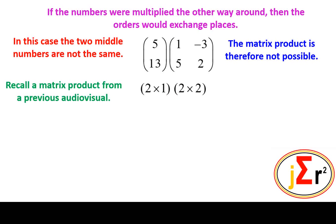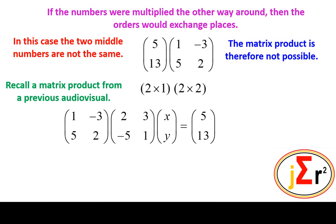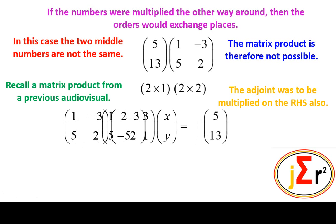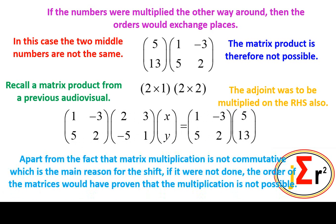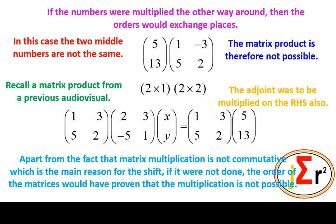Recall a matrix product from a previous audio-visual. We had a matrix product like that — the adjoint was to be multiplied on the right-hand side also. Apart from the fact that matrix multiplication is not commutative, which is the main reason for the shift, if the shift were not done, the order of the matrices would have proven that the multiplication is not possible.